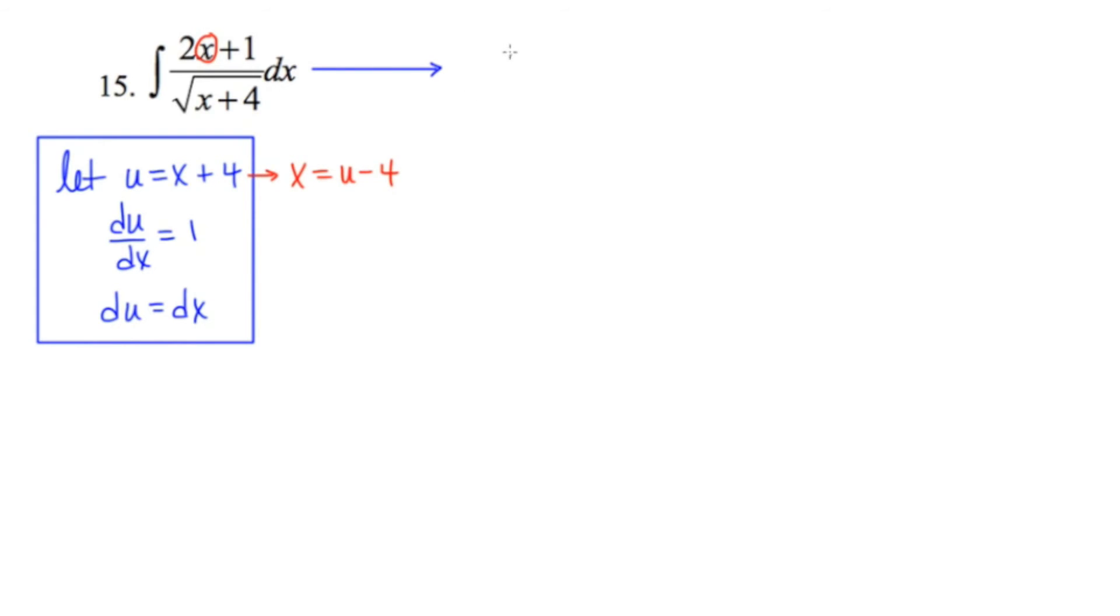And now I'm ready to rewrite my originally stated problem in terms of u. So we're going to have 2 times x, but our new expression for x is going to be u minus 4, plus 1, divided by the square root of x plus 4, or the square root of u, or u to the 1 half. Now it ends with dx, and dx is the same as du.